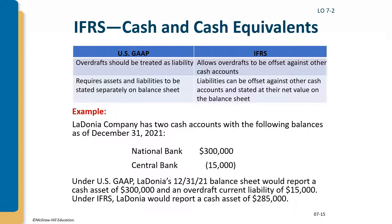Under U.S. GAAP, if there is another cash account at the same bank where you have the overdraft, you can net them. But IFRS lets you offset against any other cash account. U.S. GAAP requires assets and liabilities to be stated separately on a balance sheet, while under IFRS liabilities can be offset against other cash accounts and stated at their net value.